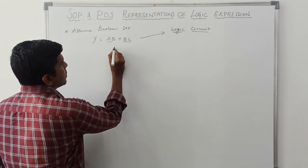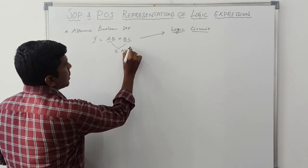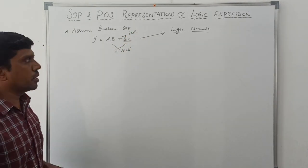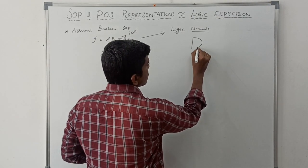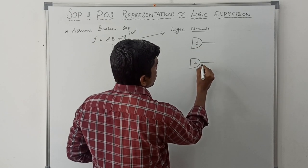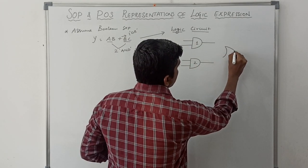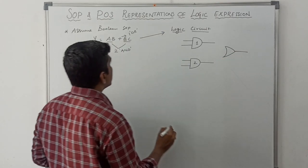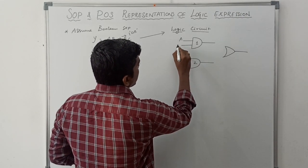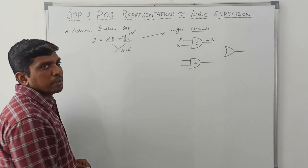In this expression we have two product terms, so I need 2 AND gates and 1 OR gate. AND gate 1 and AND gate 2 each have 2 inputs. The first product term is A dot B, so the input of the first AND gate is A, B and its output is A dot B.